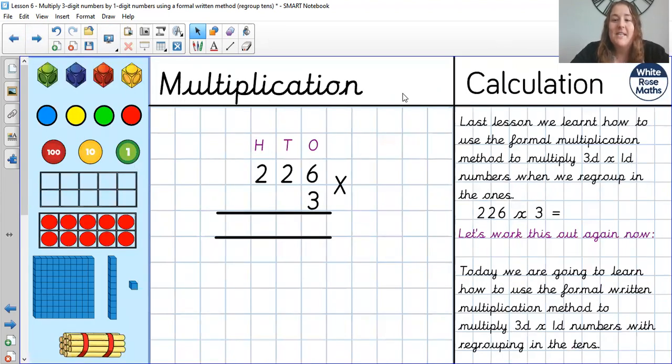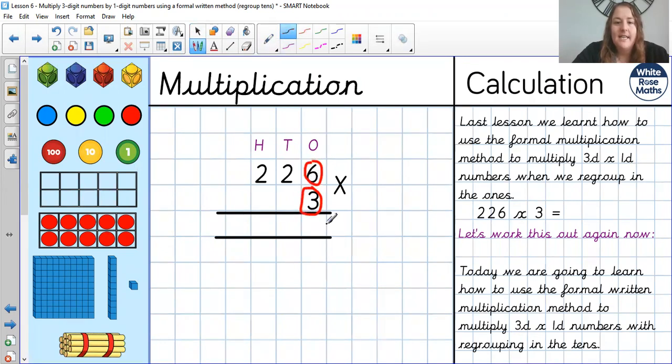So this is a calculation that we did yesterday, where it regroups in the ones. Let's just remind ourselves how to do it. This is 226 multiplied by 3. We start with 3 times 6 which is 18. The 8 goes in the ones and the 1 beneath the tens column. Then we do 3 times 2 which is 6 and we add that 1 at the bottom which is 7. Finally we do 3 times 2 here in the hundreds column which is 6. Okay the only difference that we're going to be doing today is where we regroup in the tens. Let's see what it looks like.